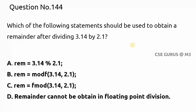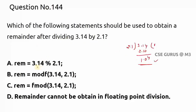Coming to question number 144: which statement obtains a remainder after dividing 3.14 by 2.1? Manually: 2.1 × 1 = 2.1, so the remainder from 3.14 is about 1.04. However, the modulo operator (%) in C works only for integers — it will not work for floating-point numbers.